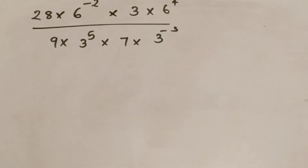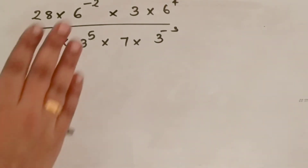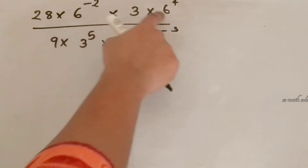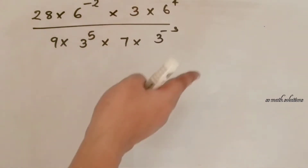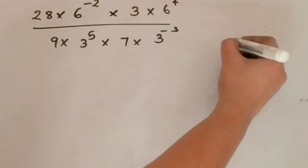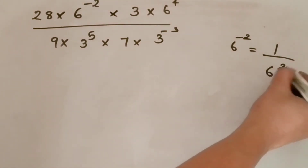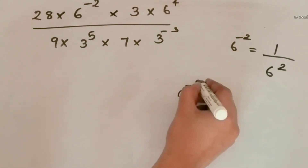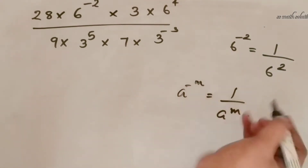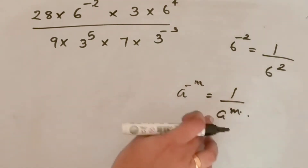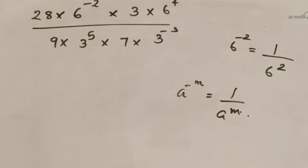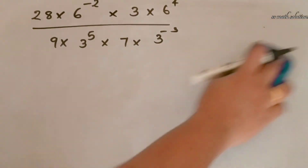Here is the next example: (28 × 6⁻² × 3 × 6⁴) / (9 × 3⁵ × 7 × 3⁻³). For the negative exponents, recall that a⁻ᵐ = 1/aᵐ, and conversely 1/aᵐ = a⁻ᵐ. So 6⁻² = 1/6², and a negative exponent in the denominator becomes positive in the numerator.